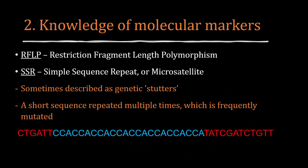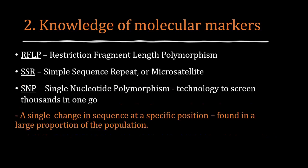Another kind of molecular marker is SSRs — simple sequence repeats, or microsatellites. Sometimes described as genetic stutters, they are short sequences repeated multiple times which are frequently mutated between individuals. Sequencing can help identify differences in SSRs between individuals. My final example is an SNP — single nucleotide polymorphism. These are single base pair changes in genetic sequence at a specific position, found in a large proportion of the population. Again, sequencing will help you identify these.